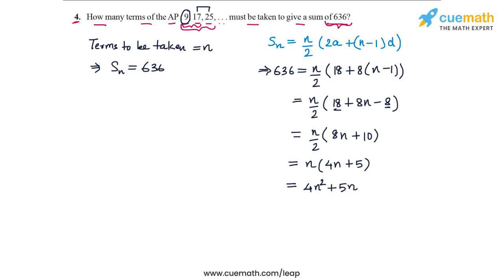So 4N square plus 5N equals 636. Let's write this as a standard form quadratic equation: 4N square plus 5N minus 636 equals 0. If we solve this quadratic equation and find the value of N, we will get our answer.